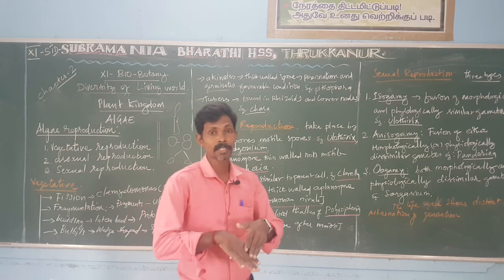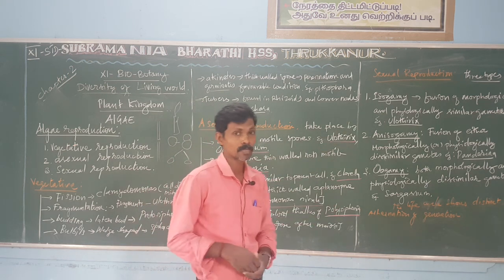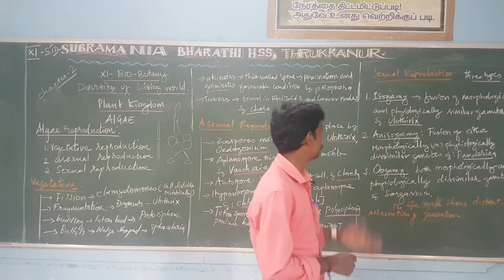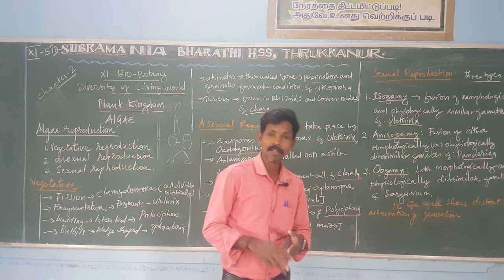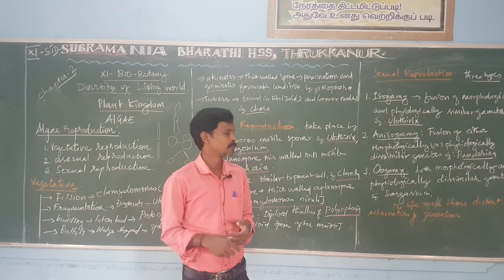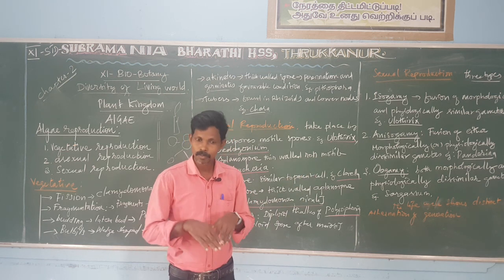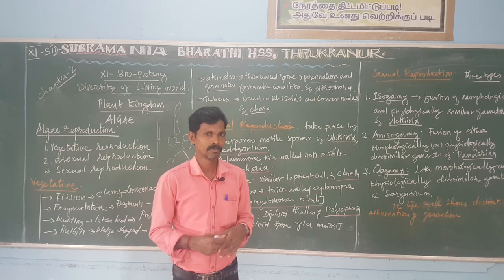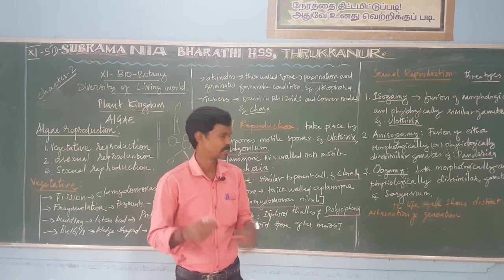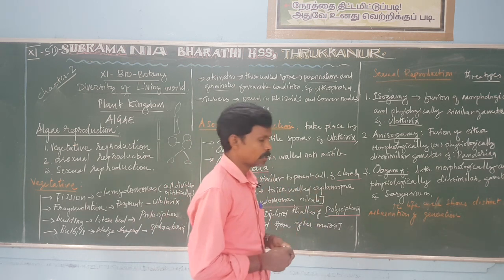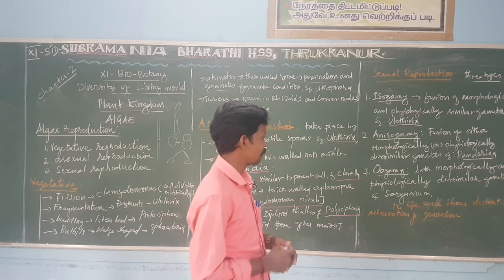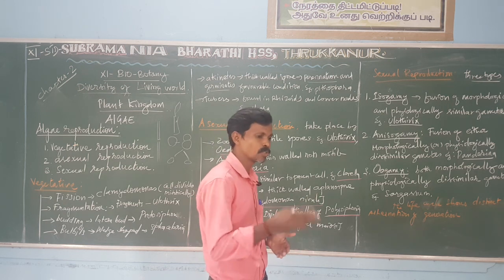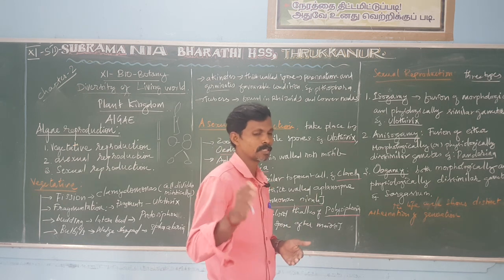To summarize: if the gametes are similar, it is called isogamy. If either one is differentiated, it is anisogamy. If both are differentiated, it is oogamy. The life cycle shows distinct alternation of generation, as followed by other plants.